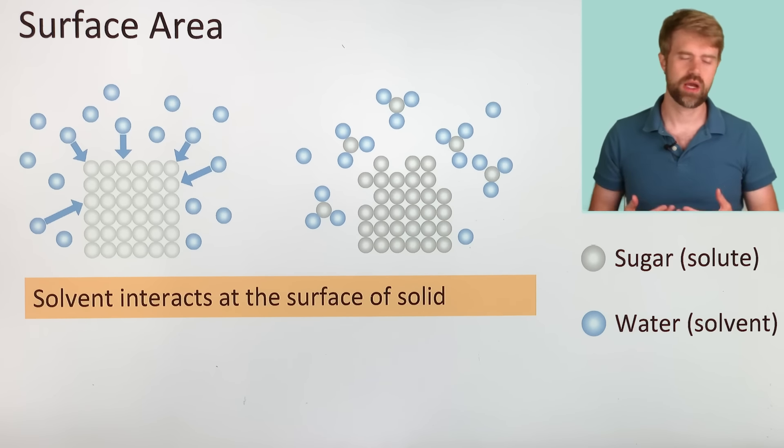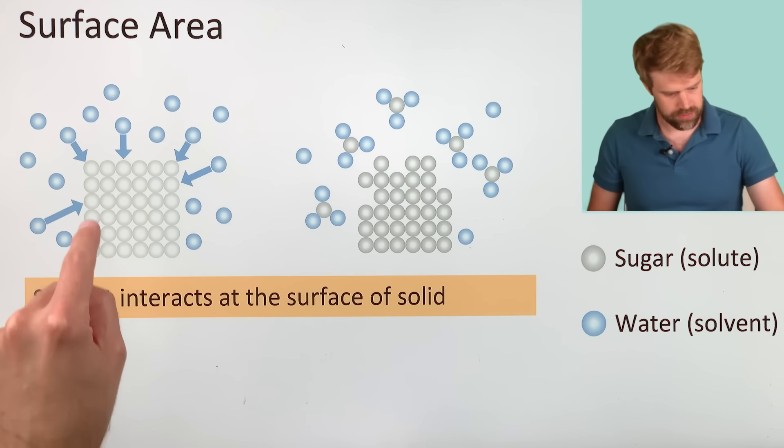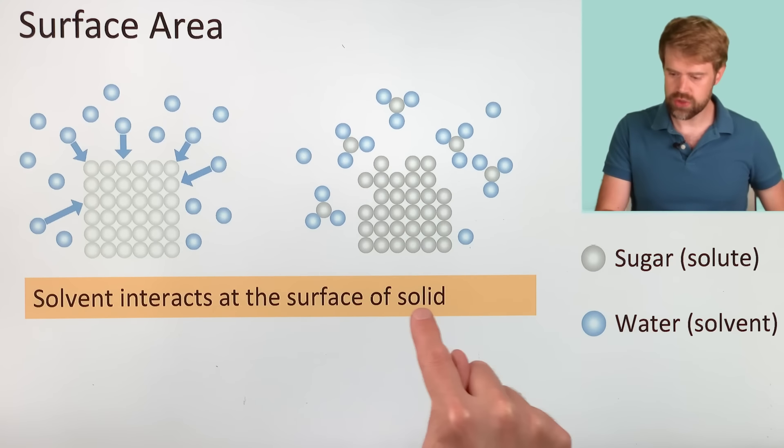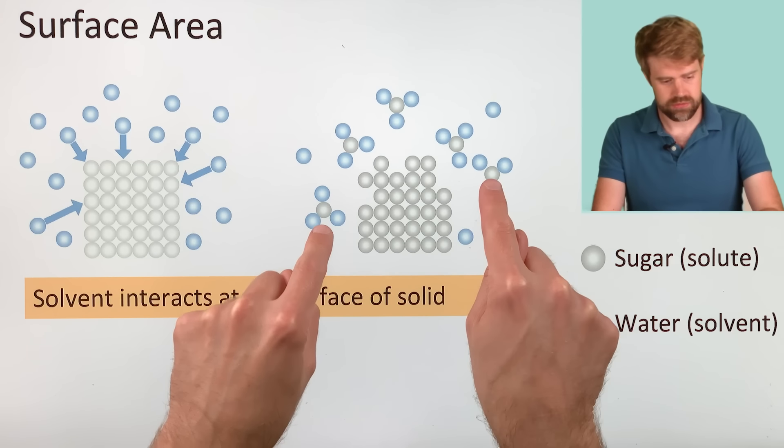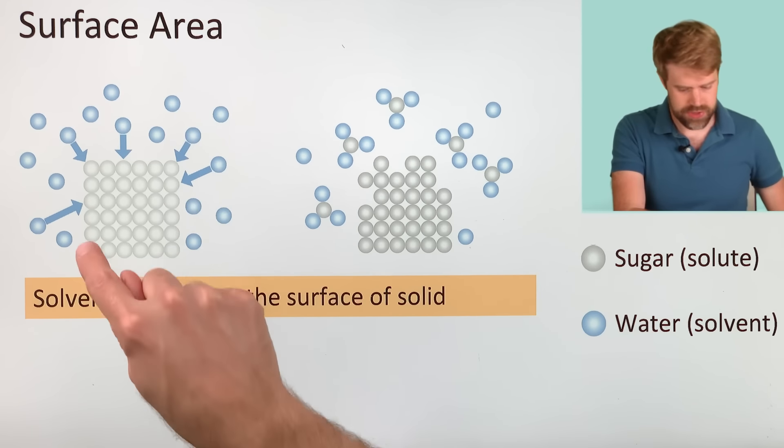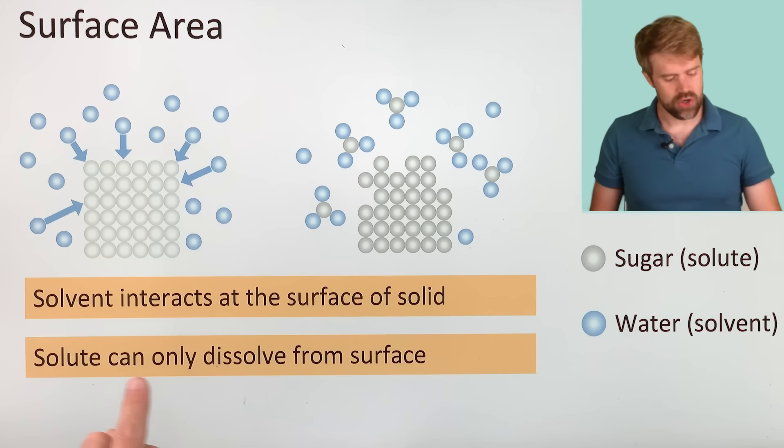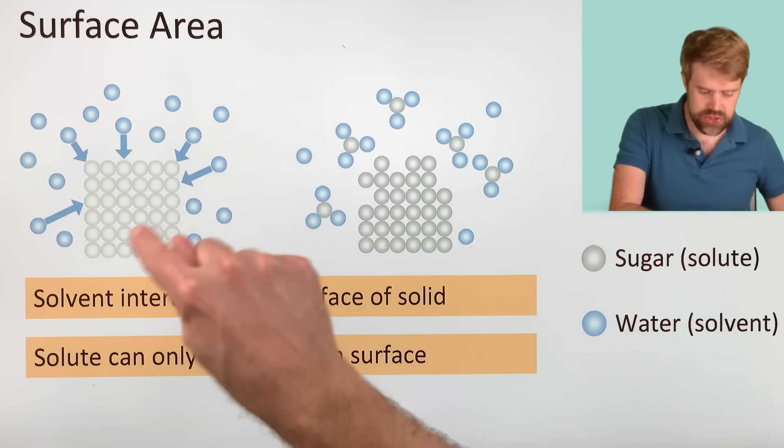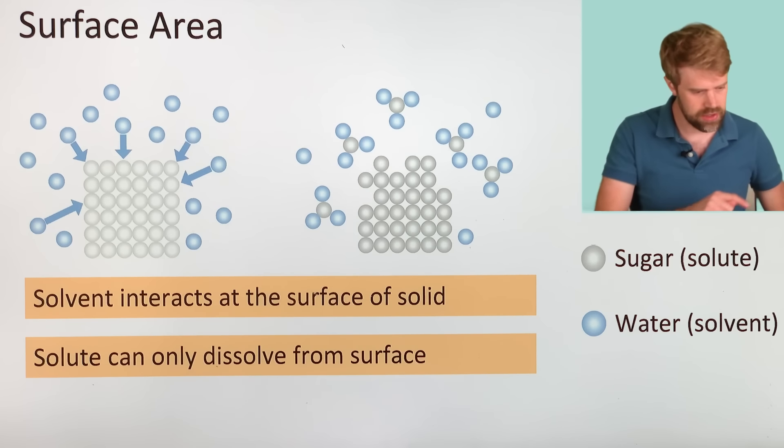When a solid dissolves, solvent molecules interact with the solute particles at the surface of the solute, and they carry the solute particles into solution. You can see it right here. Some of these solute particles on the surface are dissolved and get carried away. But a solute can only dissolve from its surface. The solute in here can't interact with a solvent, which is all the way out here.